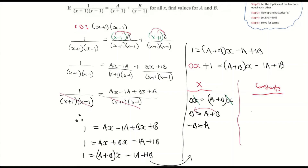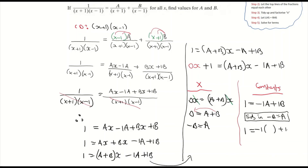Then looking at the constants: 1 equals minus 1a plus 1b. I'm going to substitute in a equals minus b. So 1 equals minus 1 times minus b, plus 1b. Minus 1 times minus b gives plus b, so 1 equals b plus b, which is 2b equals 1. Therefore b equals one half when I divide across by 2.